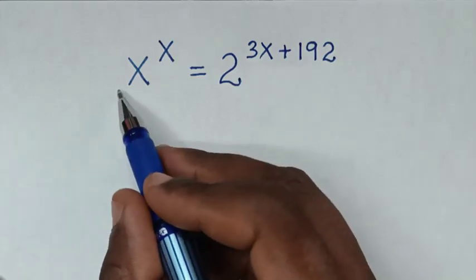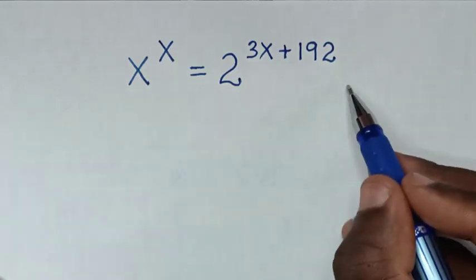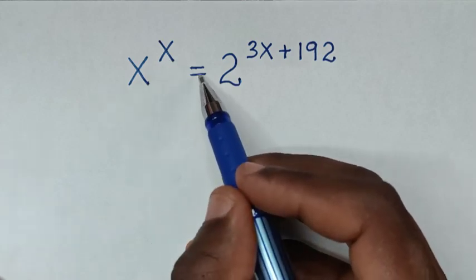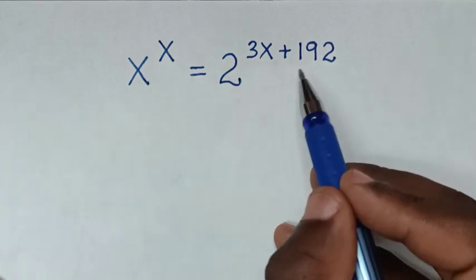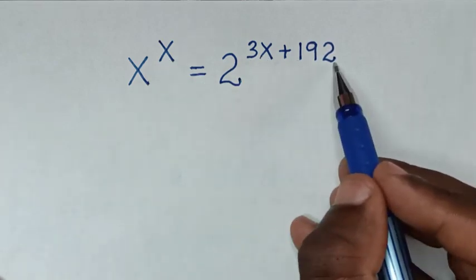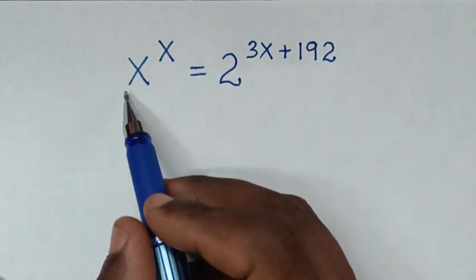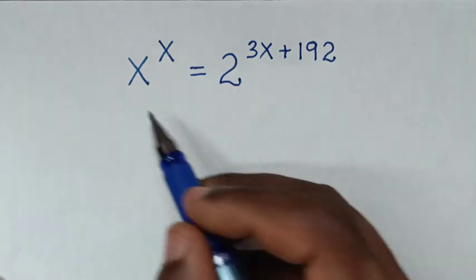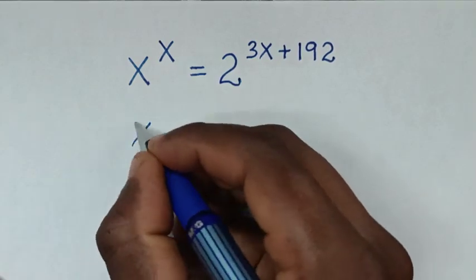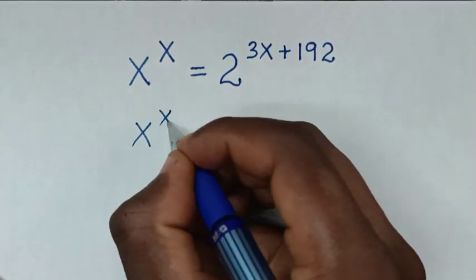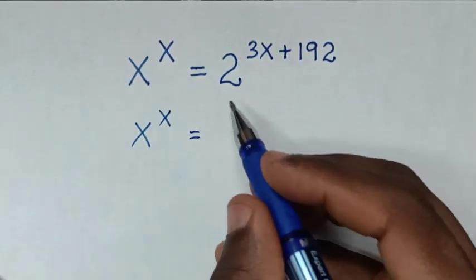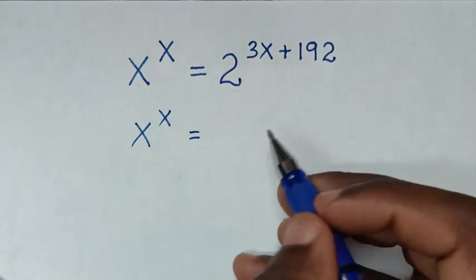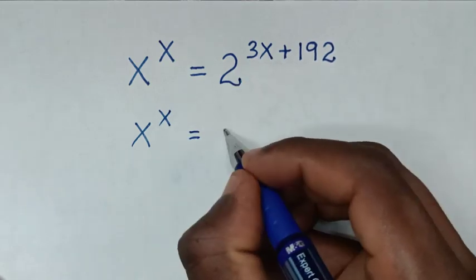Hello, you are welcome to solve this math problem, which is x to the power of x is equal to 2 to the power of 3x plus 192. To find the value of x from this equation. From here, x power of x is equal to 2 power of 3x plus 192, which is the same as 2 power of 3x.